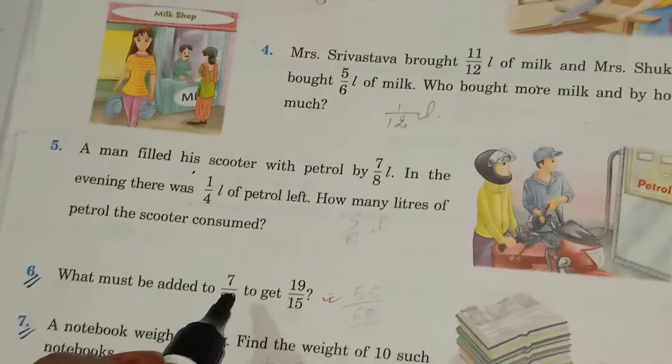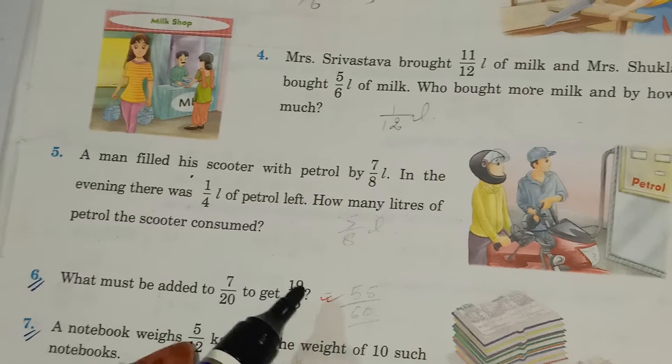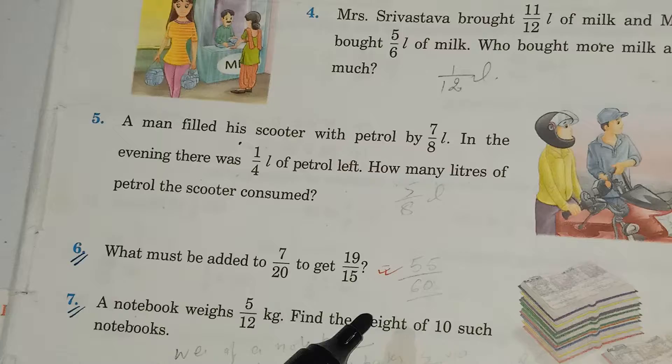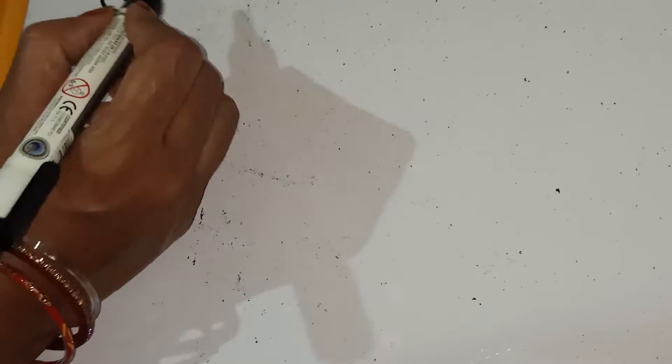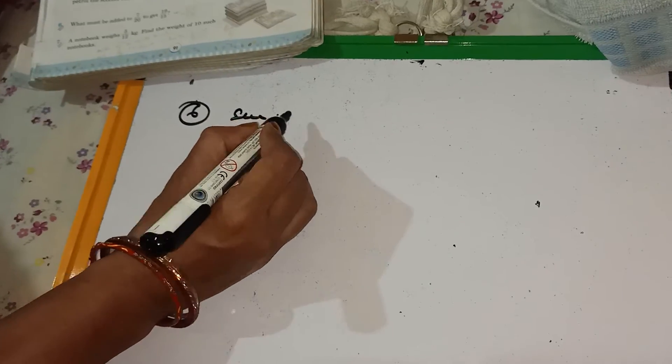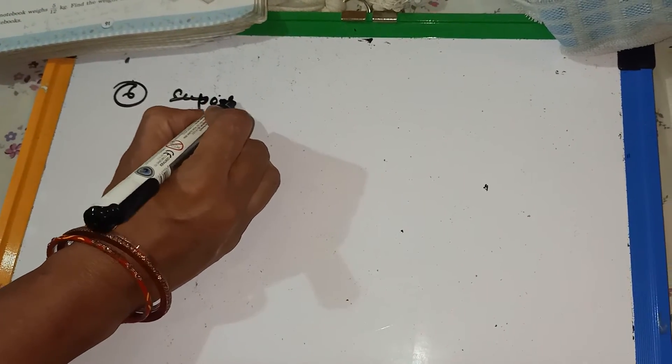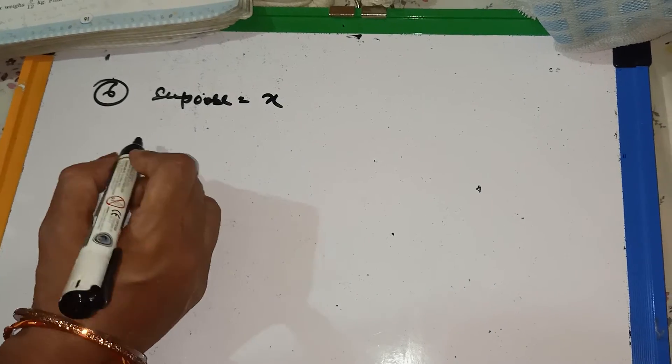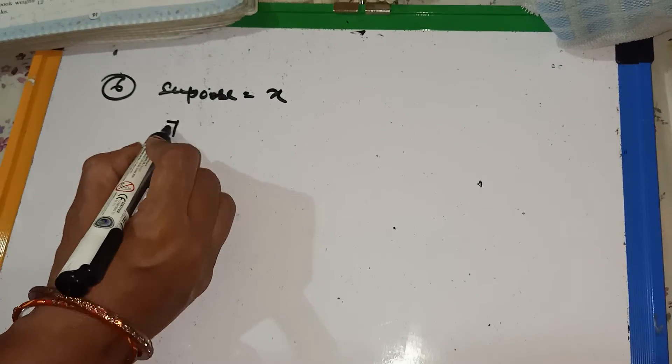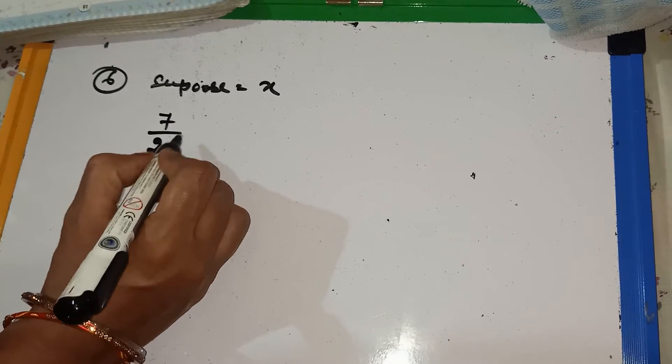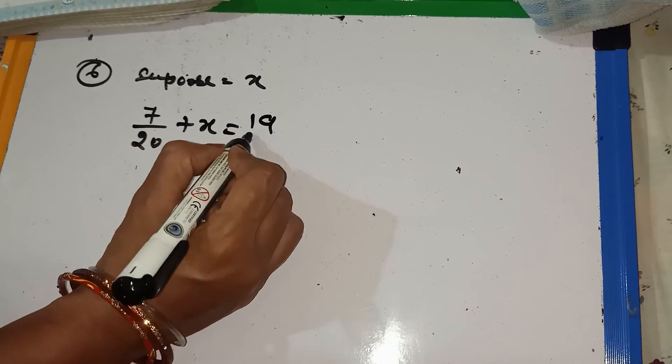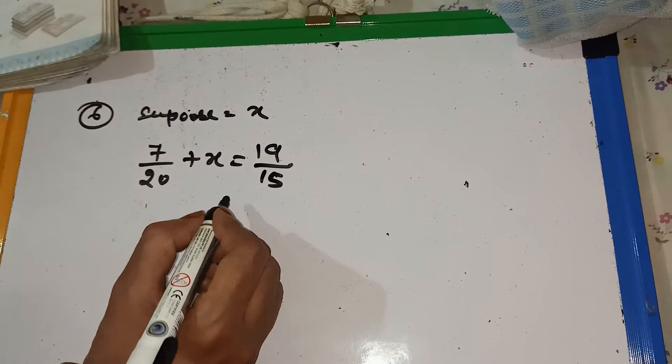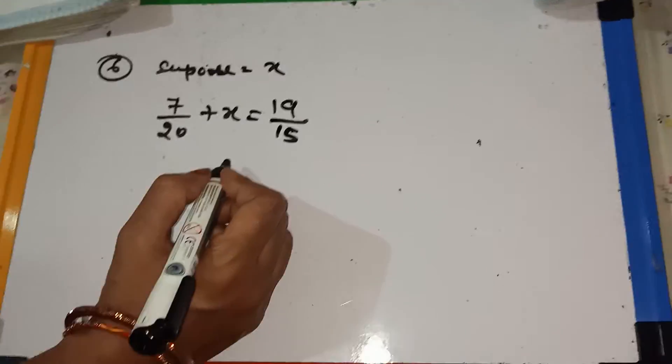And same as question number 4. Number 6, what must be added to 7 by 20 to get 19 by 15? It is also the same. Here I am giving the process. Look carefully. Suppose the number is x. So how can we write the statement? 7 by 20 plus x is equal to 19 by 15. And by this, you can solve the question easily.